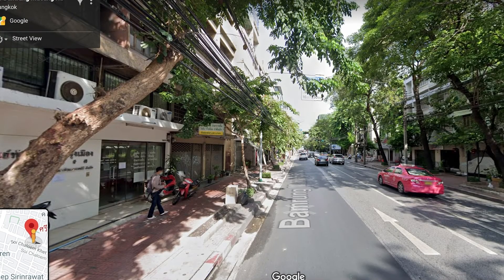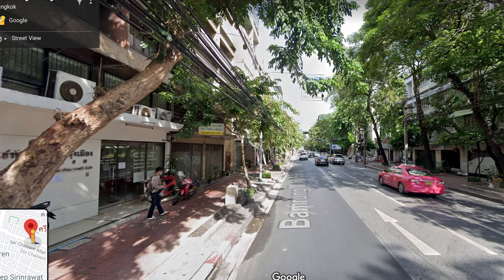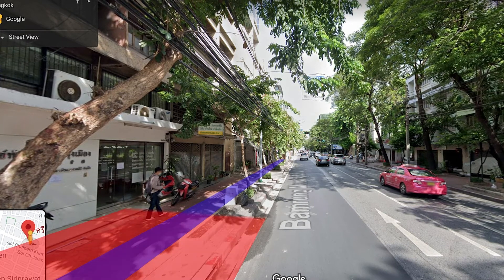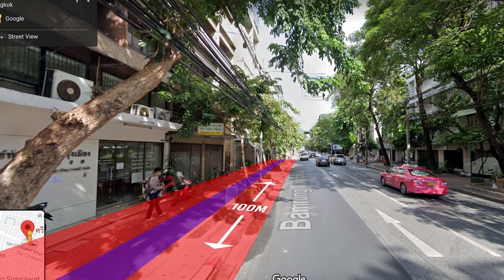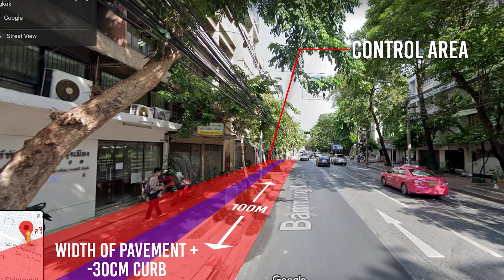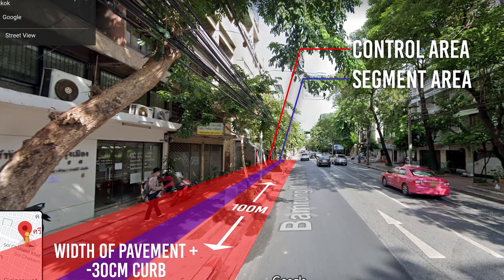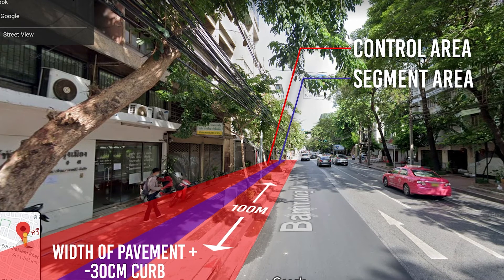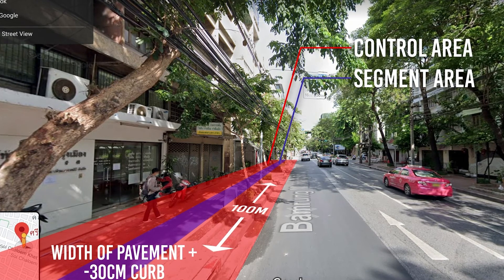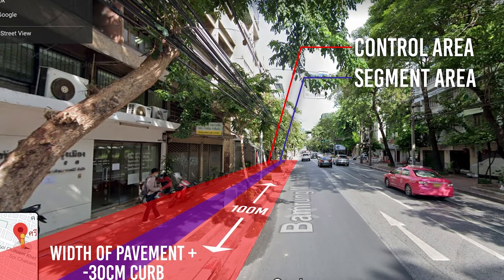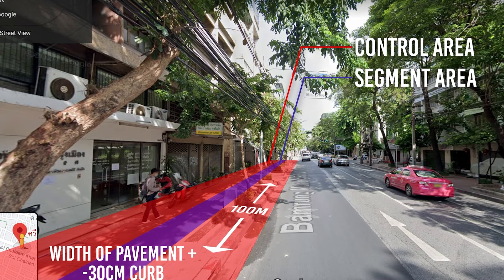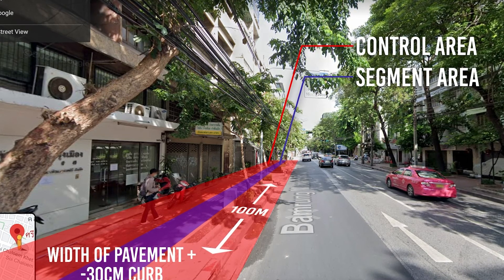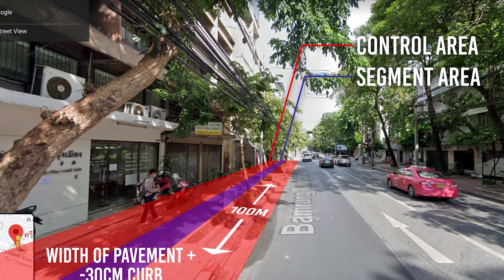After you're finished, if we've asked you to perform a control at this site, please return to your original start point and walk again the same 100m, but this time covering the entire width of the path or pavement, not just the 1m width as you already did. Take photos of all the litter, including those you had already photographed while doing the standard segment. This provides us with a reference area.